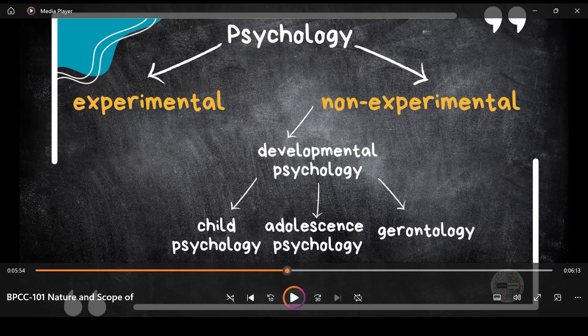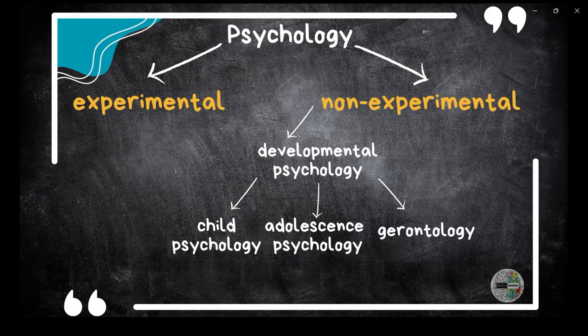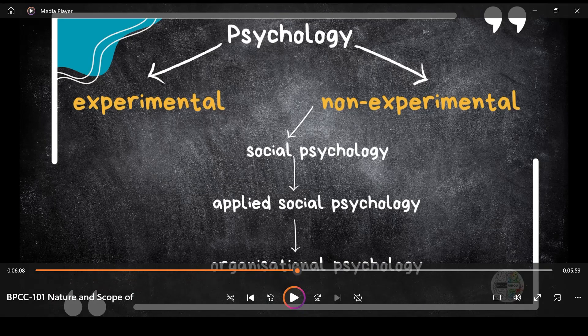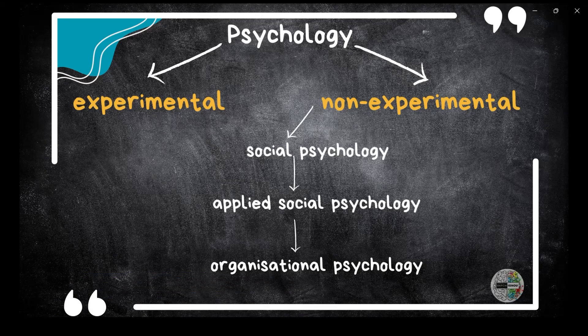However, many of these academic branches have further sub-branches. Developmental psychology has sub-branches like child psychology, adolescent psychology, and gerontology. Similarly, social psychology has an applied branch and has given rise to an applied field called organizational psychology — so from social psychology we get applied social psychology, and then we get organizational psychology.